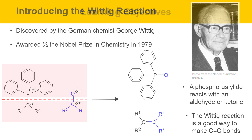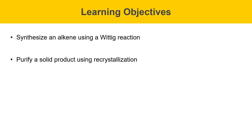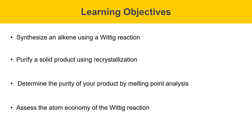This slide describes some learning objectives for this experiment. After this experiment, you will be able to synthesize an alkene using a Wittig reaction, purify a solid product using recrystallization, determine the purity of your product by melting point analysis, and assess the atom economy of the Wittig reaction. Atom economy is a new concept — it's about keeping track of the atoms that actually get used to form the product versus atoms that are lost in waste, and we'll talk about that towards the end.